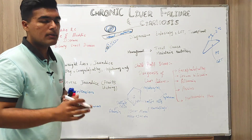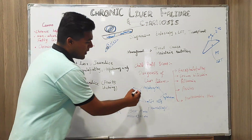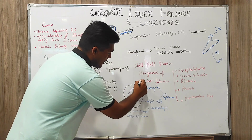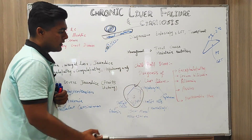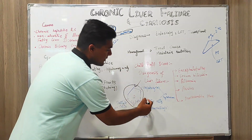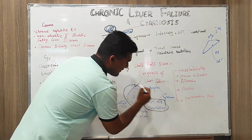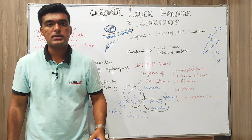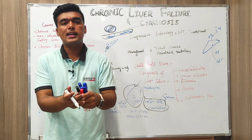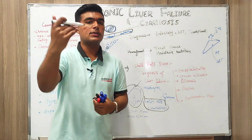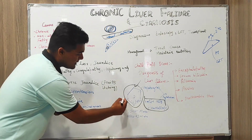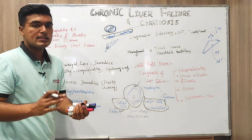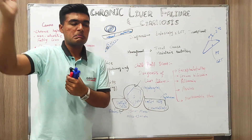For the histopathological view, we have a functional unit called the hepatic nodule. On that we have Kupffer cells and hepatocytes. Kupffer cells are macrophages; combining with hepatocytes they secrete cytokines. And stellate cells are the cells which basically play their role in fibrosis.